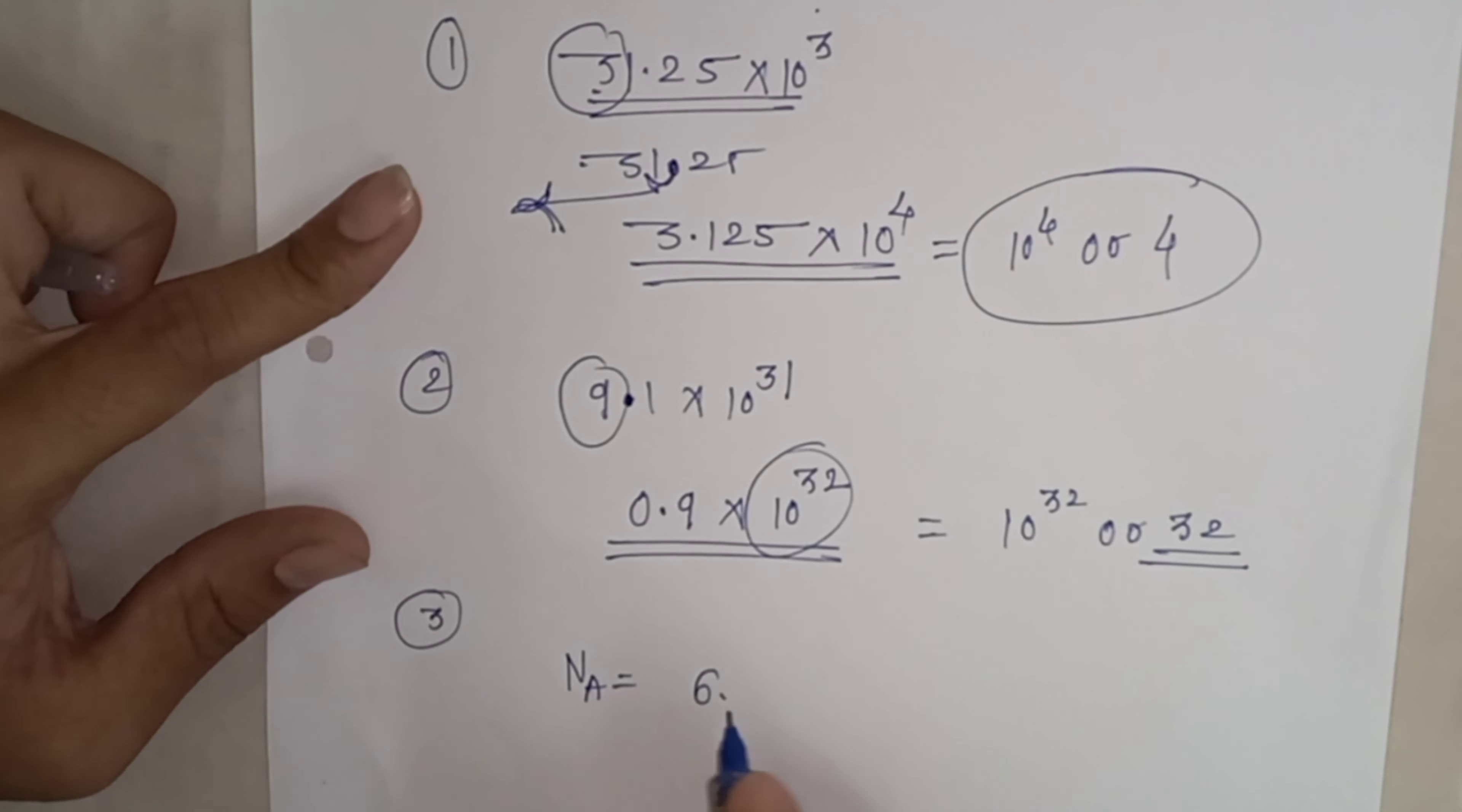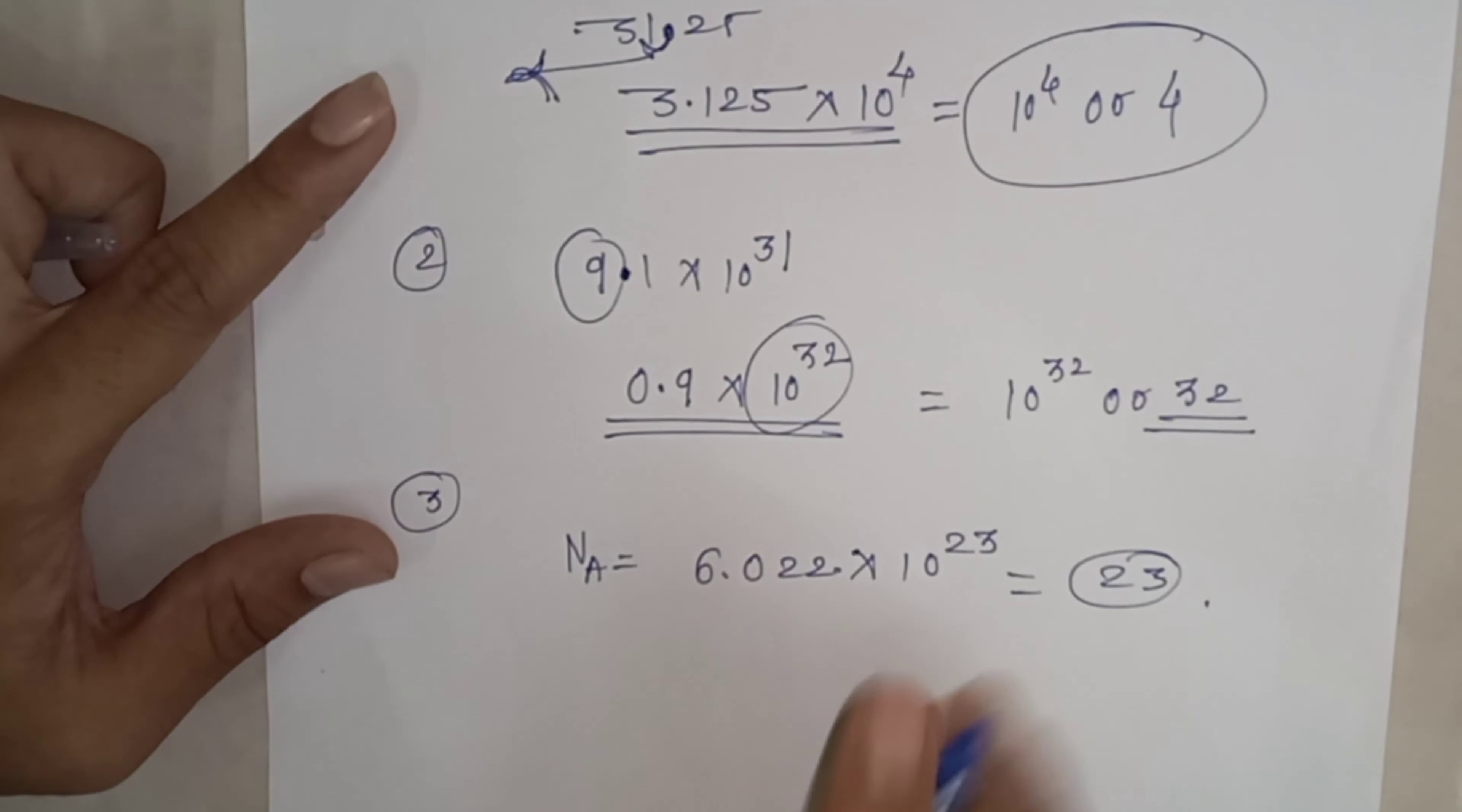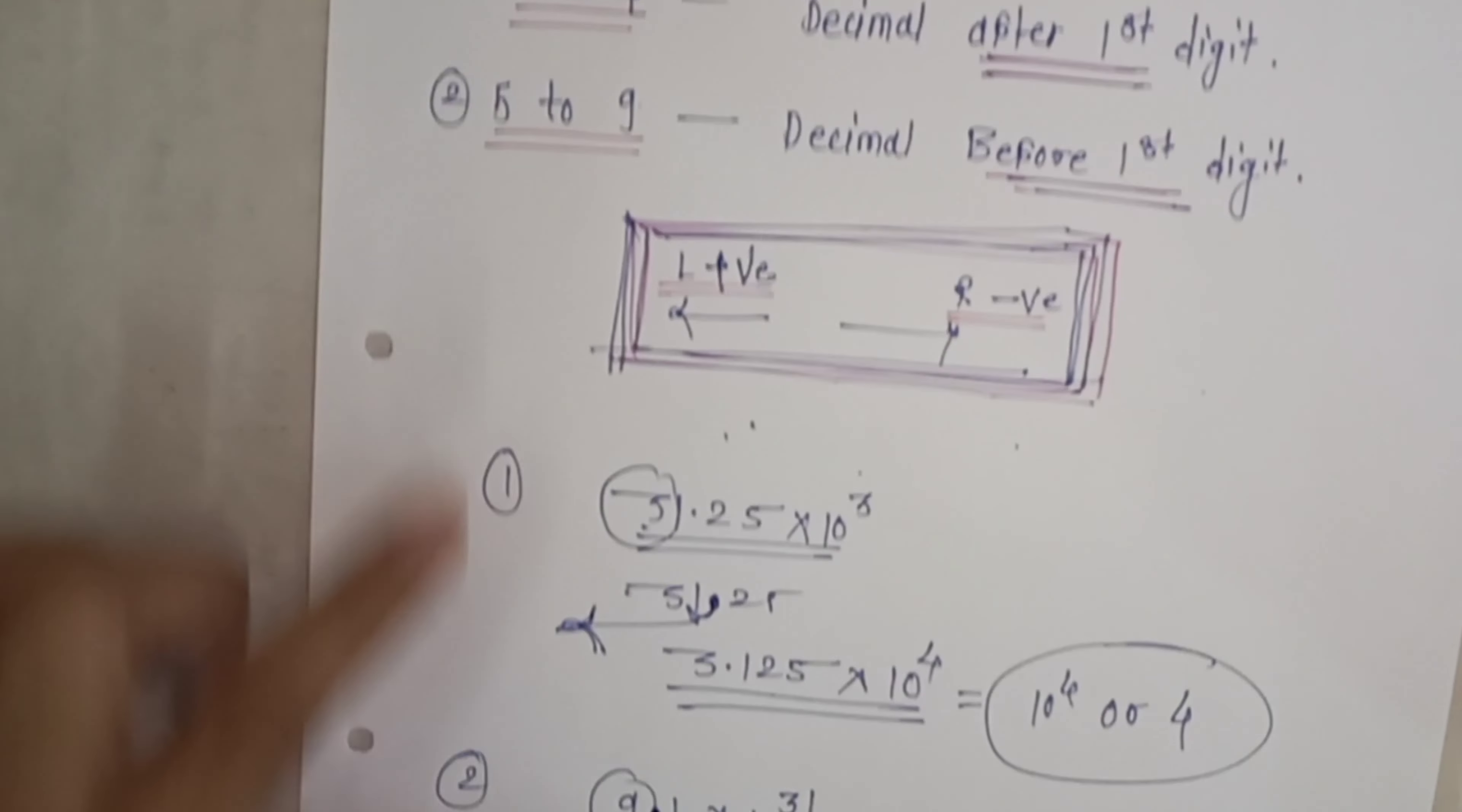Let's take a last example. Suppose we have Avogadro's number: 6.0222 × 10²³. Now we need to find the order of magnitude for this number. Order of magnitude means power of 10. You might think the answer is directly 23, but let's check by applying our conditions and rules. The first digit is 6, so this falls under the second condition because 6 is between 5 and 9.